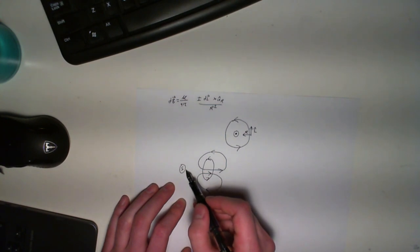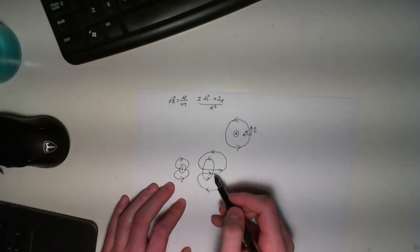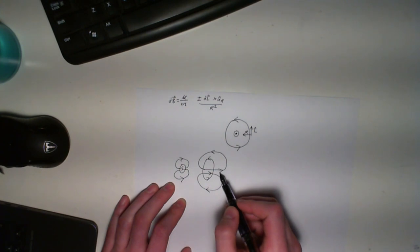We also know that for the bar magnet, the field lines always travel from north to south. If we look at this, we can see the field lines travel north to south.